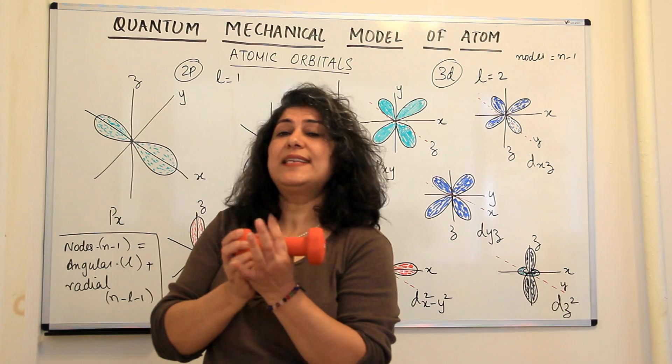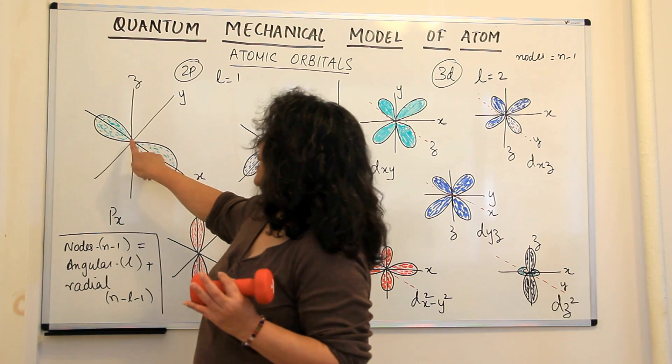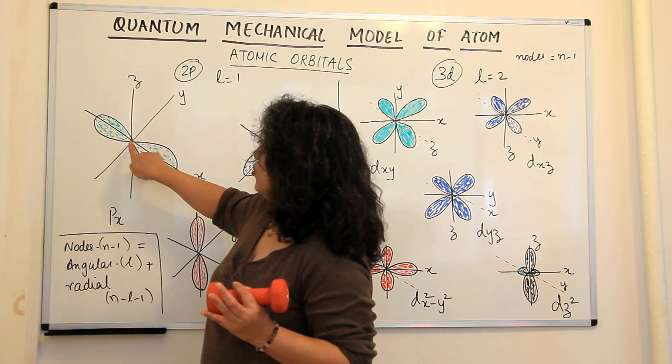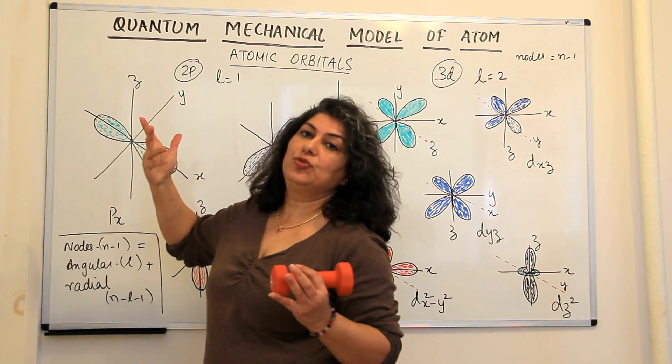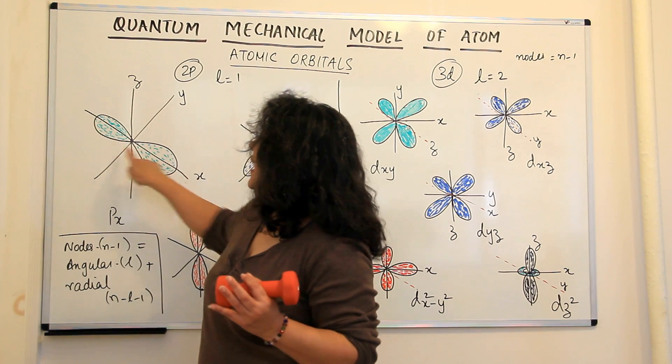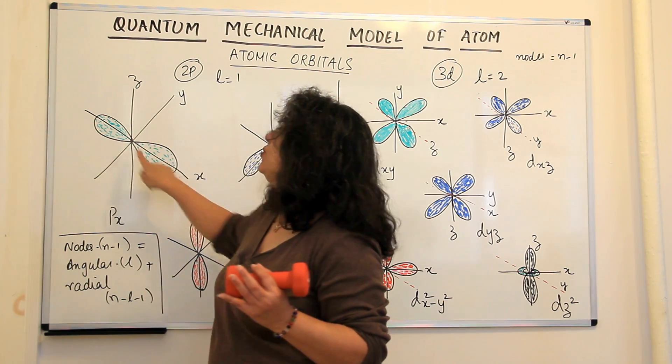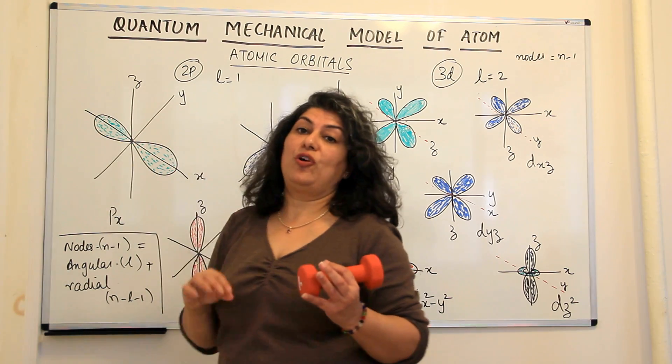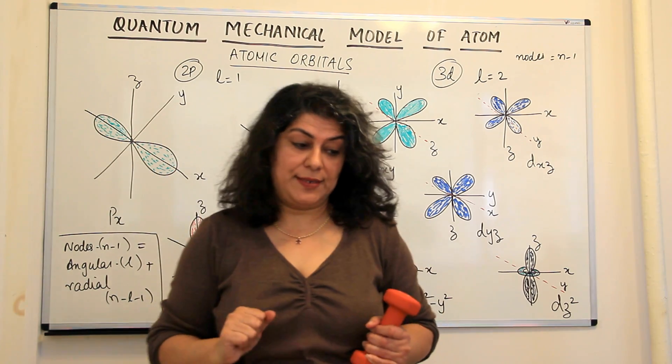So in the center you have this node — the probability is absolutely zero. This dumbbell shape, with two symmetrical lobes on both sides, is the shape known as the dumbbell shape for P orbitals.